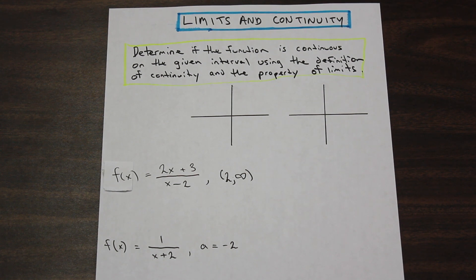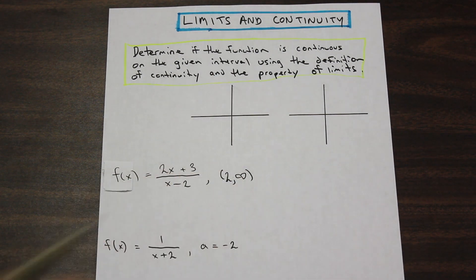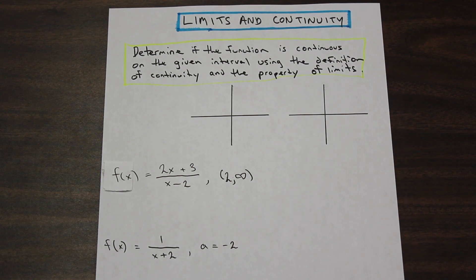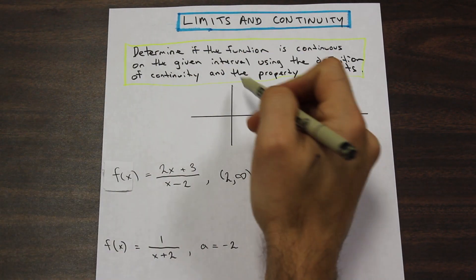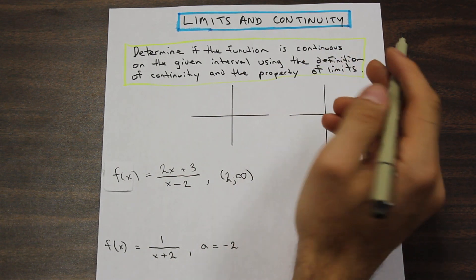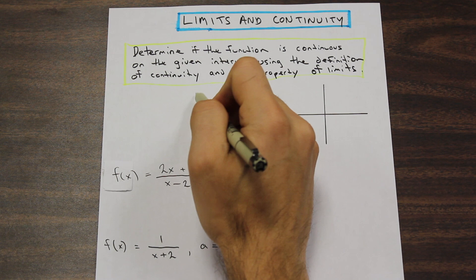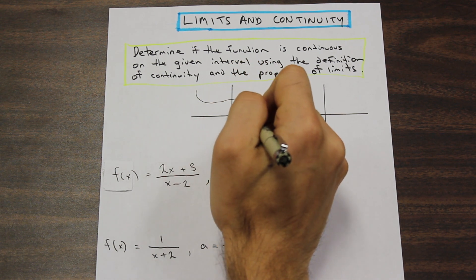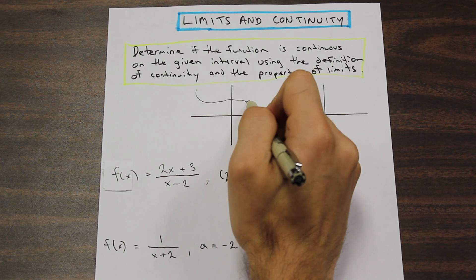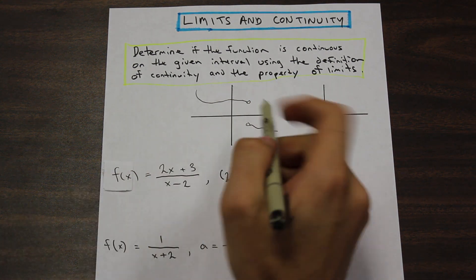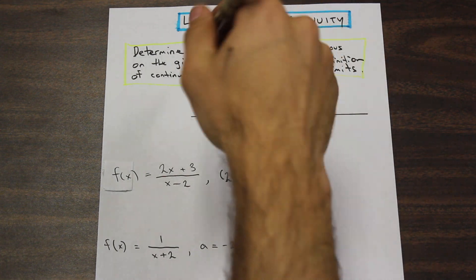So let's talk a little bit about continuity and limits and what this question is asking us. We're being asked to determine if these functions are continuous on the given interval using the definition of continuity and the property of limits. So what does it mean for a function to be continuous? A continuous function is one that gradually increases or decreases and doesn't jump or change abruptly. Let me show you what a non-continuous function would look like.